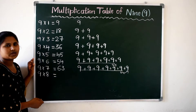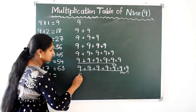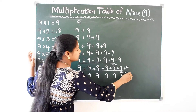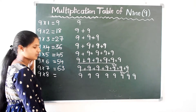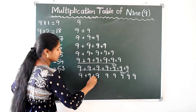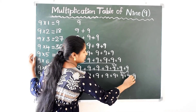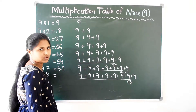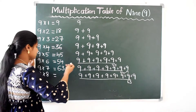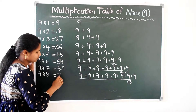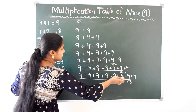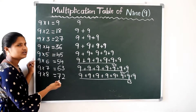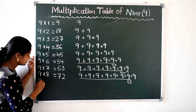Next, 9 8 times — 1, 2, 3, 4, 5, 6, 7, 8. Ok, 9 8 times are — we know if you add 9 seven times you get 63. So 63 plus 9 gives us 72. 9 8's are 72. If you add all these 9's we will get 72.